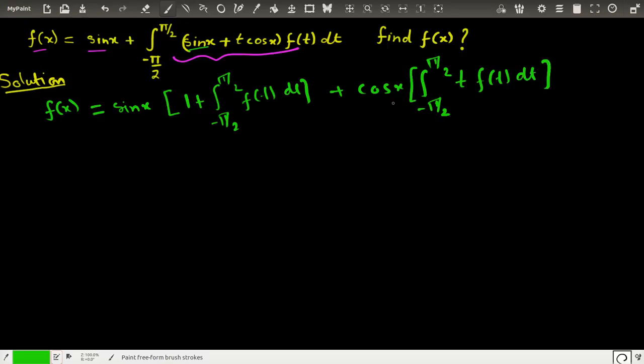Now remember, since these are the limits of integration are constant, it would be a constant. So basically what we can do is we can club this and say it a constant A and this constant as B.